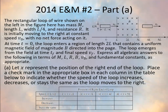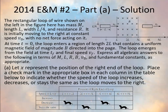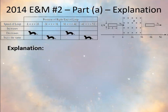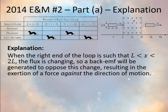The question is whether the speed increases, decreases, or stays the same as the loop moves right. When L < x < 2L — that is, when the right end of the loop is between L and 2L — the loop is still entering the field. There is an increasing magnetic flux into the page inside the loop. Lenz's law tells us that nature doesn't like changes in magnetic flux, so there will be an induced EMF resulting in an induced current that generates a magnetic field out of the page inside that loop.